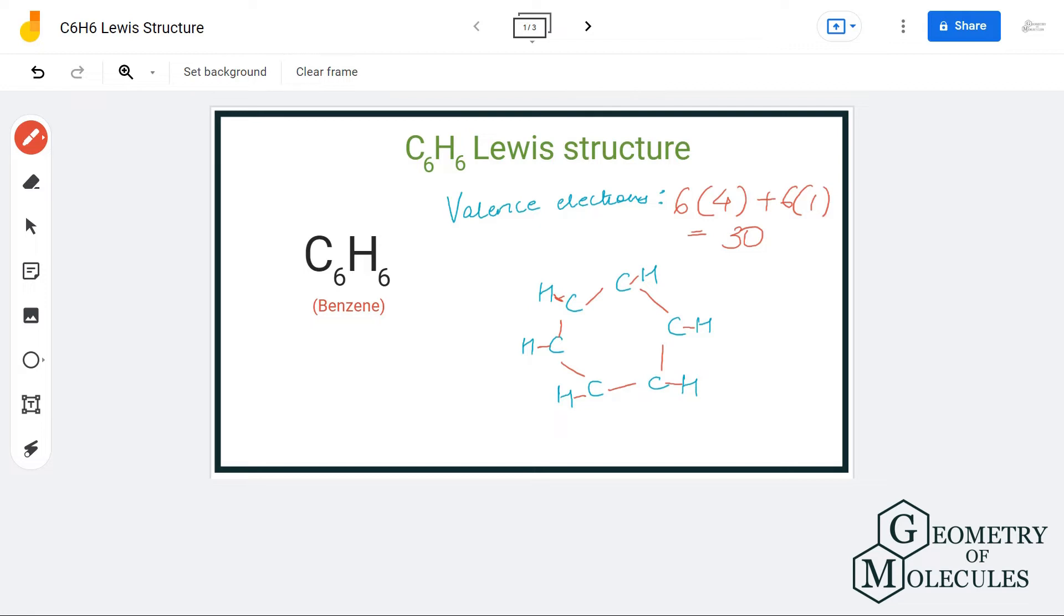So we can accommodate these electrons alternatively on these carbon atoms because carbon atoms do have some valency that they can satisfy by forming a double bond.